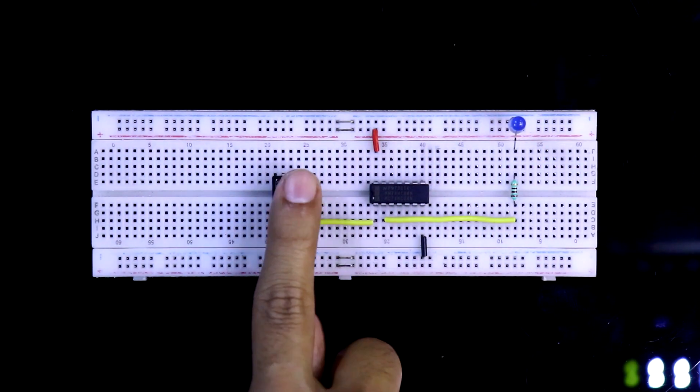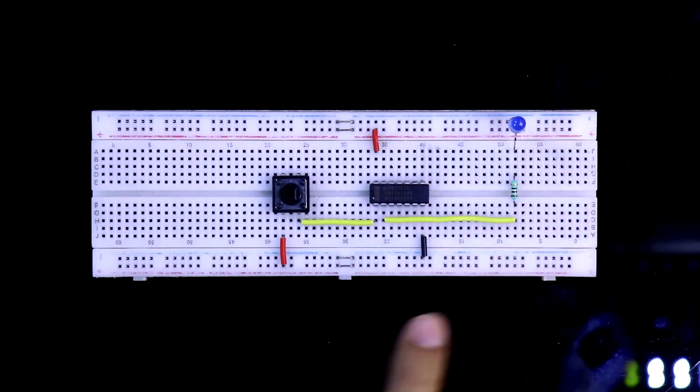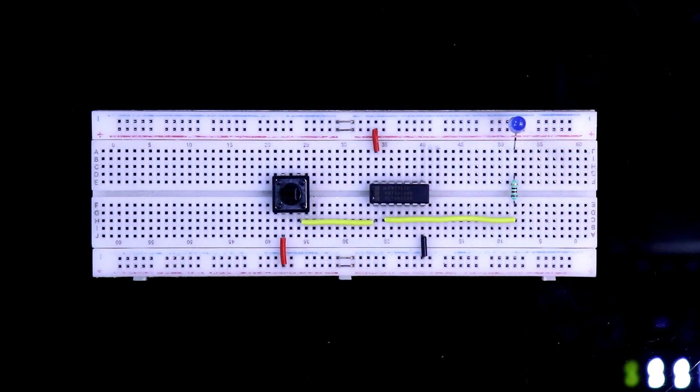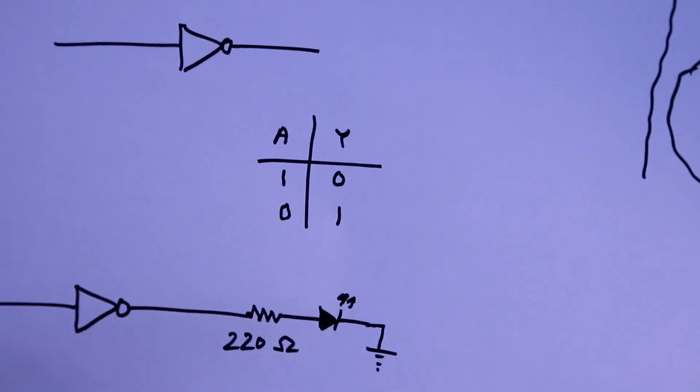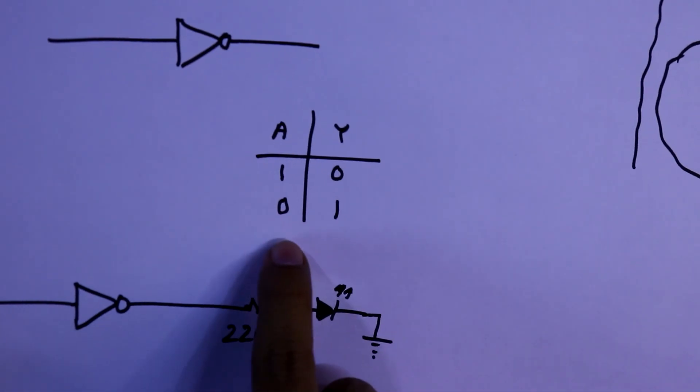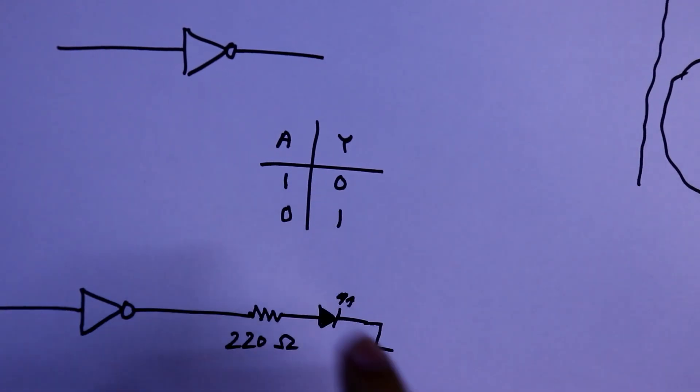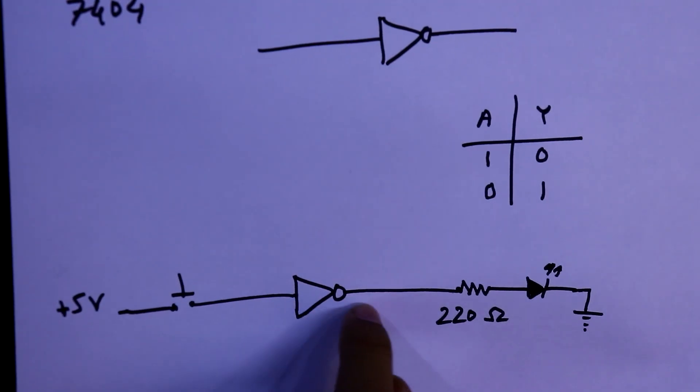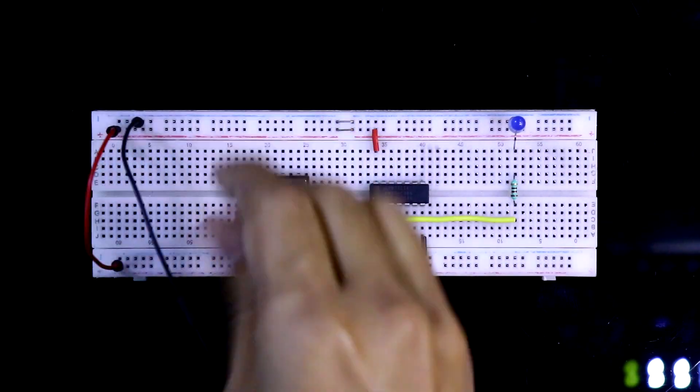Whenever we press the switch, the LED should turn off, and whenever it is unpressed then it should be on. And this is what the truth table is telling us: whenever it is unpressed we should get 1, and whenever it is pressed we should get 0. When the input is connected with high signal, connecting both the positive and negative rails.